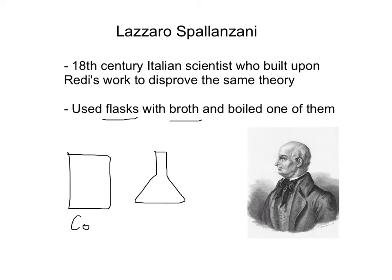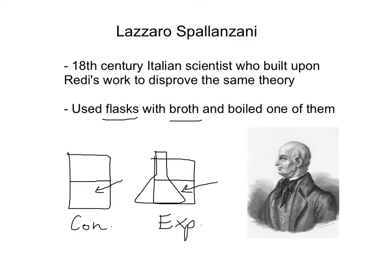There's the control beaker and the experimental. He boiled the broth because he thought: if you leave it exposed to air, bacteria — and at the time he didn't call it bacteria — but he thought there were little living things that could fall in and make more living things and cause it to spoil. With the control, he left it open. With the experimental group, he closed it after boiling so that nothing new could come in. After a period of time, the control got a bunch of microscopic bacteria in it and it spoiled — you could actually see a color change. But the experimental group didn't go bad.